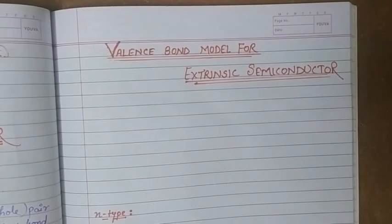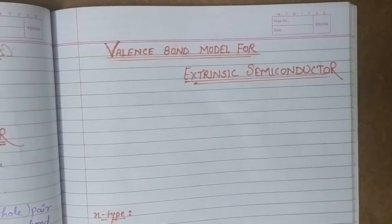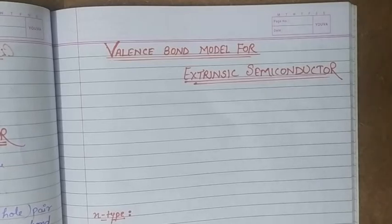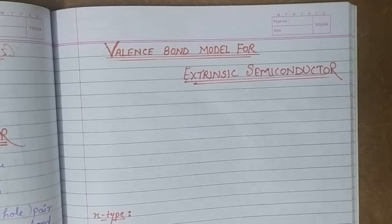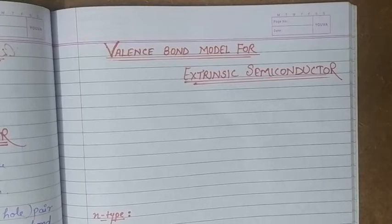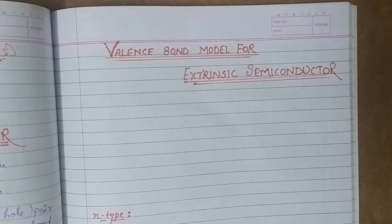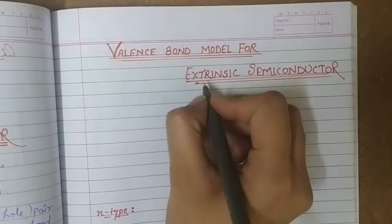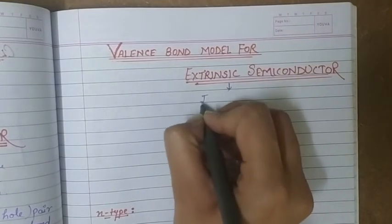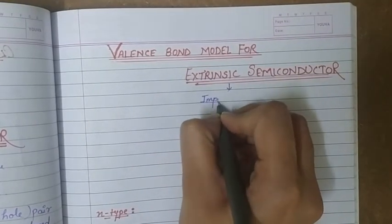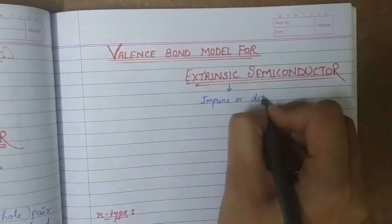After intrinsic semiconductors, we are going to discuss the valence bond model for extrinsic semiconductors. Extrinsic semiconductors are those which are doped with some specific suitable impurity atoms so as to increase their conductivity, or we can say to increase their number of charge carriers. Such semiconductors are called extrinsic semiconductors — in short, impure or doped semiconductors.